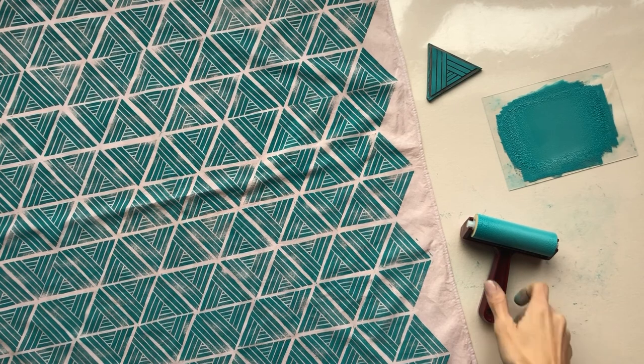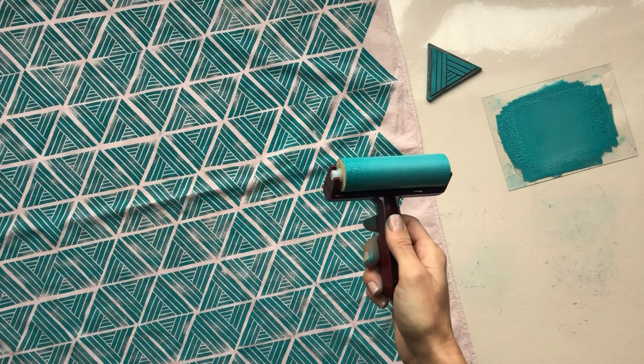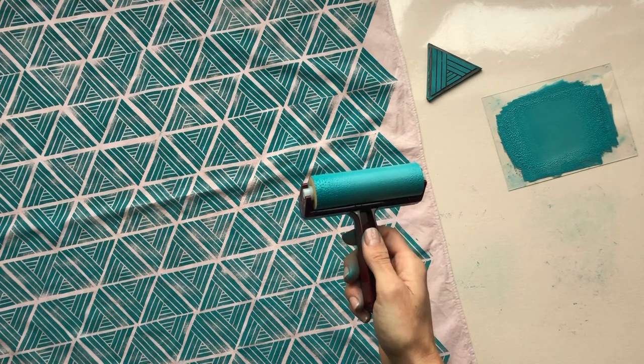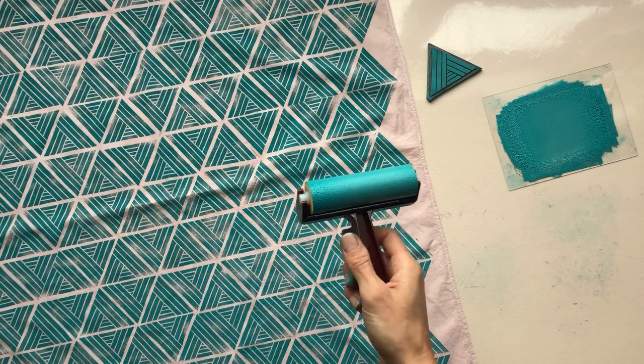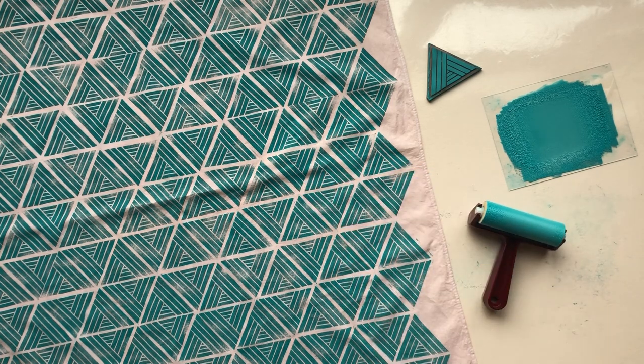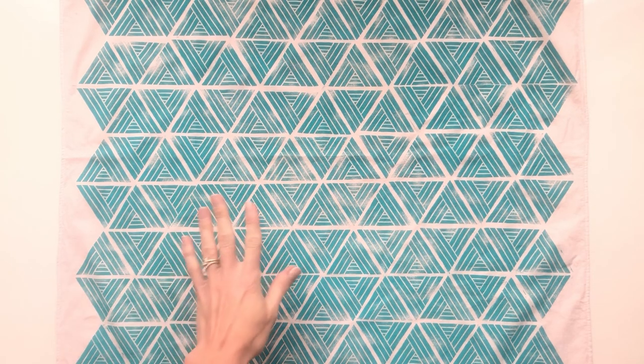So once you're done using all of your tools, be sure to clean them as soon as possible. And I often use liquid soap and water or just soap and water to clean them up. Once you're done printing your fabric, let it cure at room temperature for about a week and then it will be ready to be laundered.